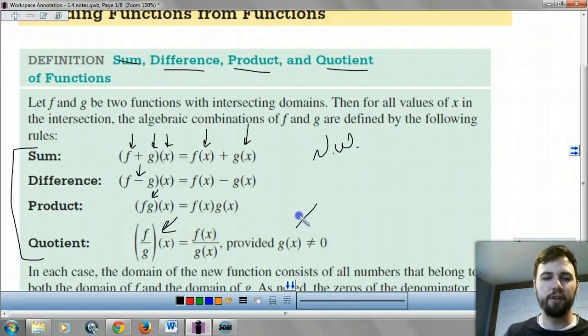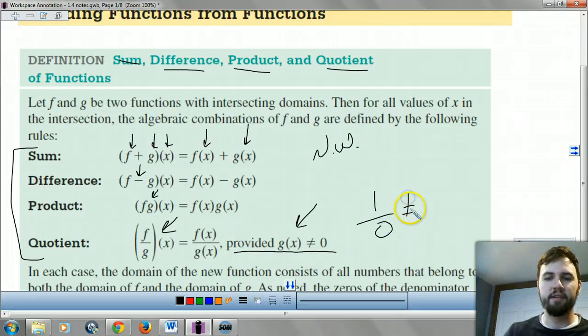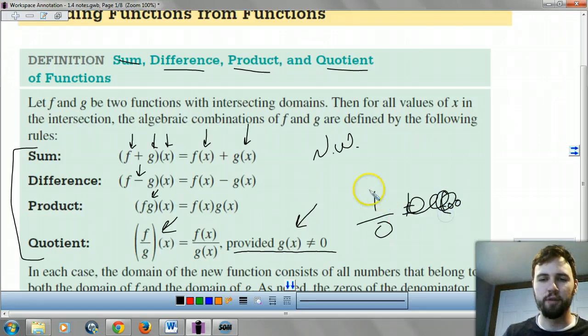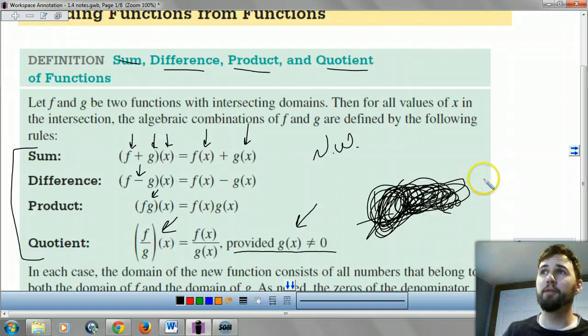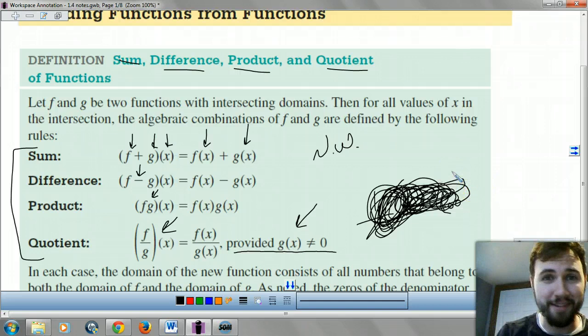The only thing you have to watch for on this guy is your g of x can't be 0, because this is a foolish statement. It's foolish. You can't divide by 0. Who do you think you are? While you guys are writing that, I'll tell you a joke. Why was the math book always so sad? Because it has so many problems.